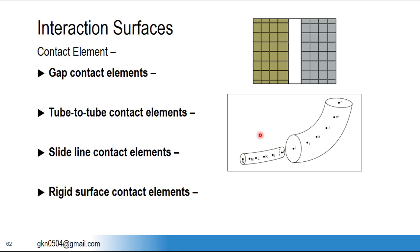In mechanical and civil engineering there are many pipe-in-pipe applications requiring tube-to-tube contact elements. The third type is the slide line contact element, similar to tube-to-tube but where sliding occurs on a plane rather than along a line. The fourth type is the rigid surface contact element, used for axisymmetric deformable components in contact with an analytical rigid surface, where deformation occurs symmetrically.